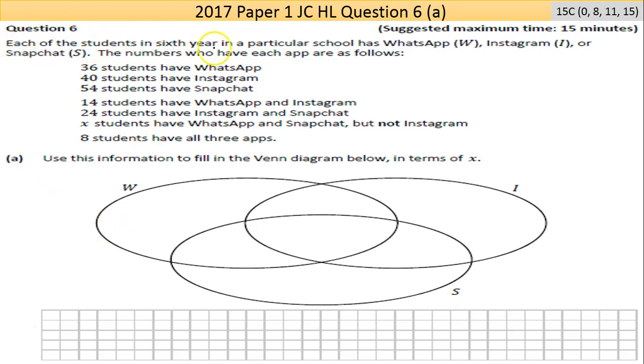Let's get stuck in. Each of the students in sixth year in a particular school have WhatsApp, Instagram or Snapchat. The number who have each app are as follows: 26 students have WhatsApp, 40 students have Instagram, 54 students have Snapchat.